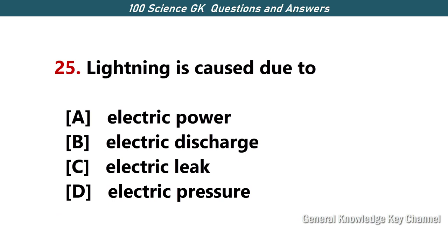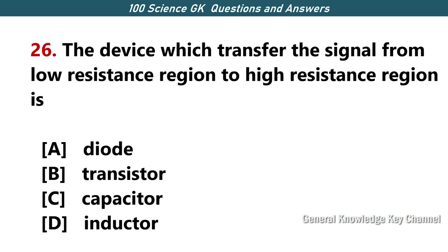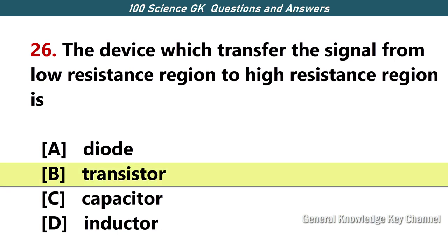Lightning is caused due to — Answer B — electric discharge. A device which transfers the signal from low resistance region to high resistance region is — Answer B — transistor.